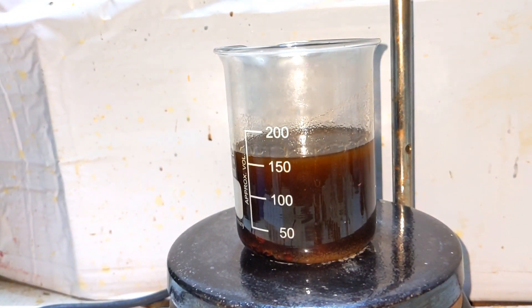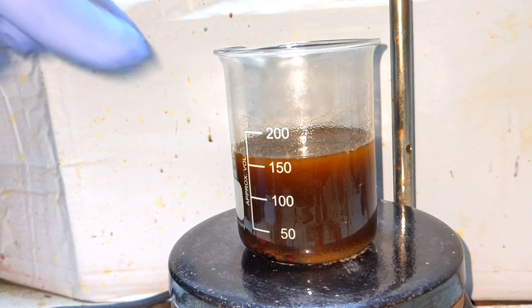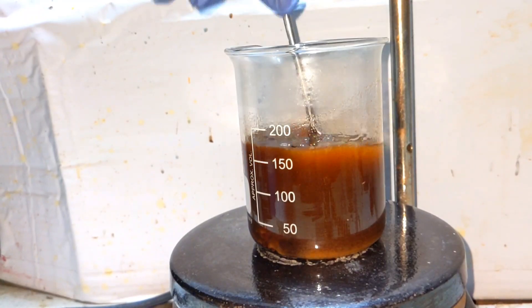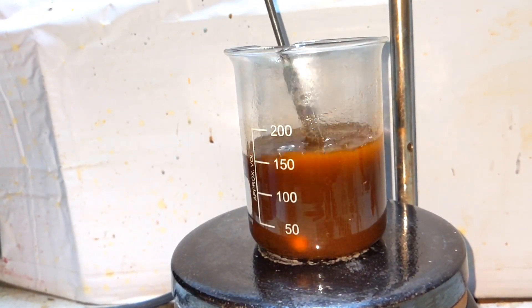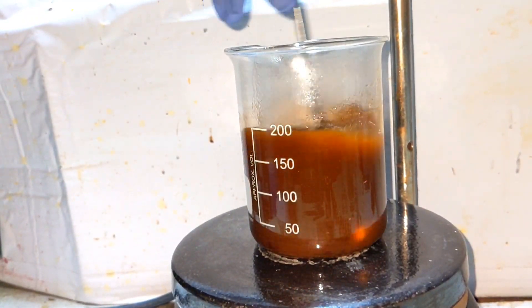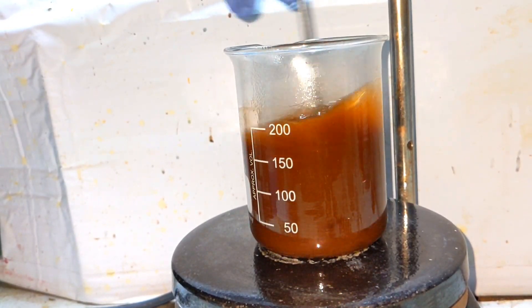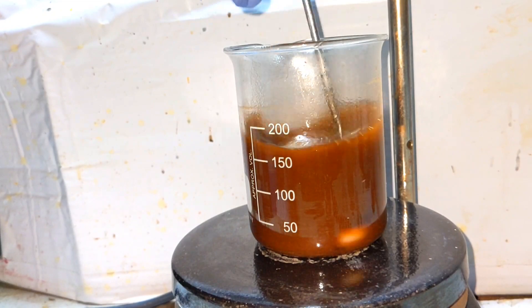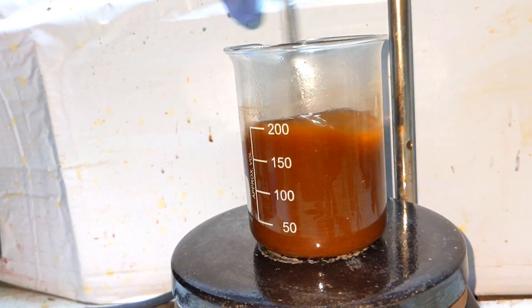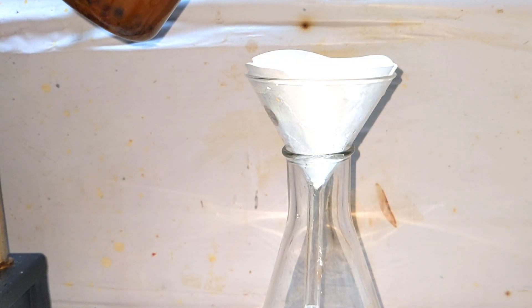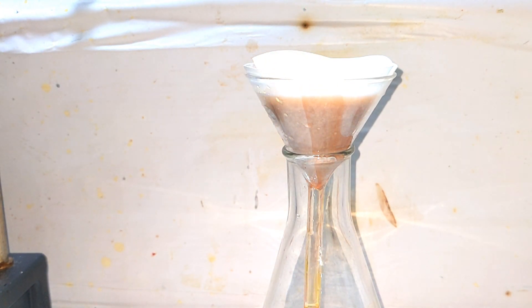This will cause the complex to precipitate out of the solution. I am using a spatula to stir it up because my magnetic stirring bar got stuck inside the precipitate. You can see the nice orange color of the compound. Now we filter the solution using a simple gravity filtration method.